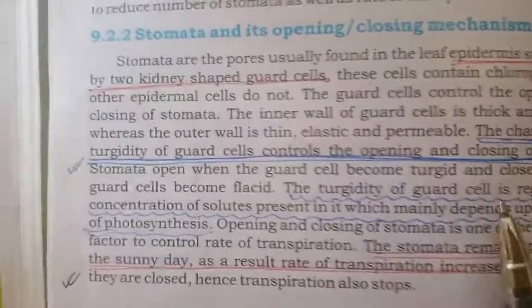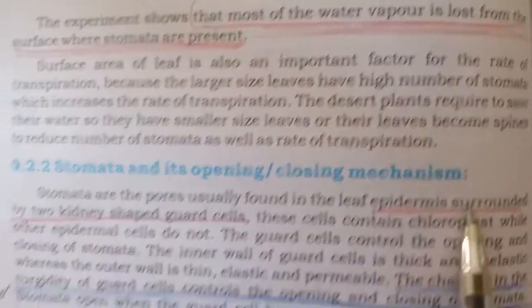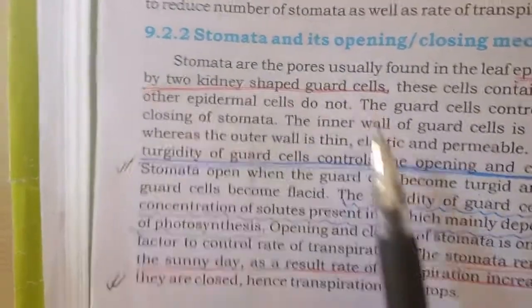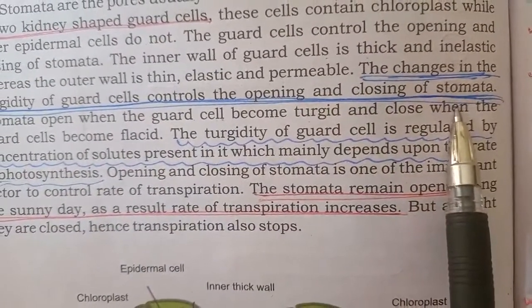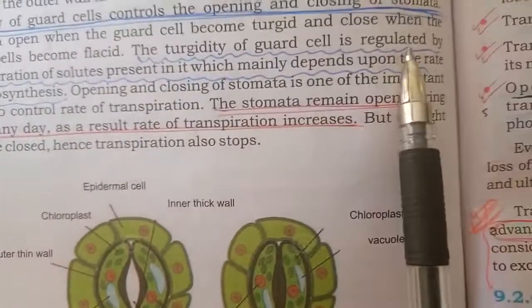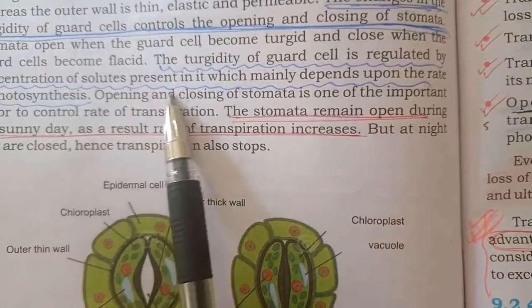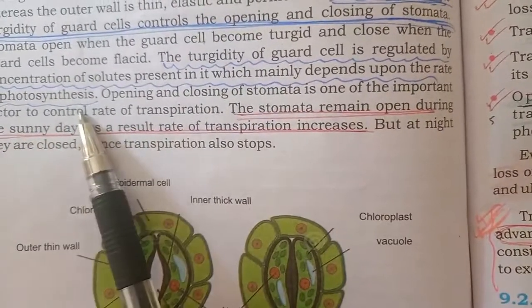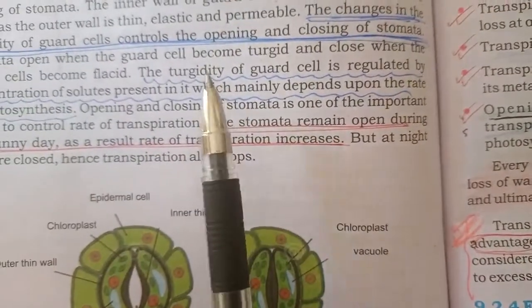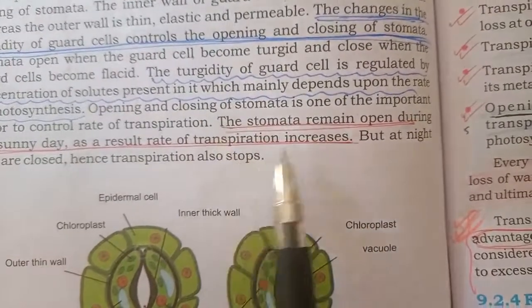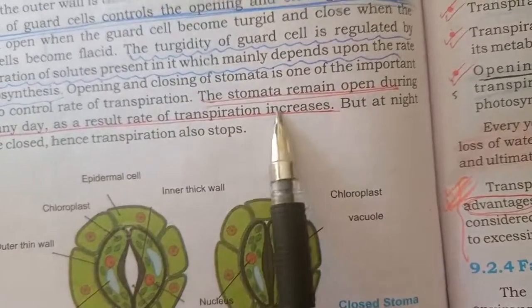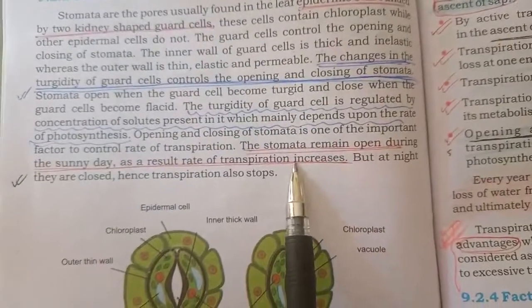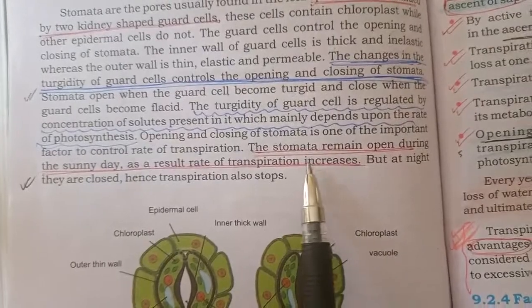Underline کیجئے: the epidermis surrounded by two kidney-shaped guard cells. اور 5th line: the change in the turgidity of guard cells controls the opening and closing of stomata. The turgidity of guard cells is regulated by the concentration of solute present in it, which mainly depends upon the rate of photosynthesis. جتی زیادہ photosynthesis ہوگی اتنی زیادہ transpiration ہوگی۔ The stomata remain open during summer sunny days — as a result rate of transpiration increases۔